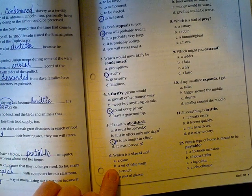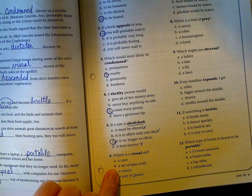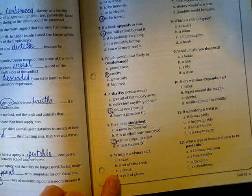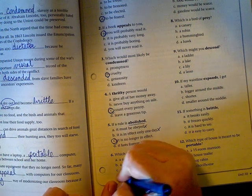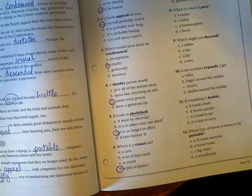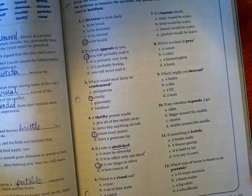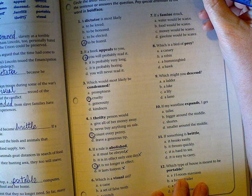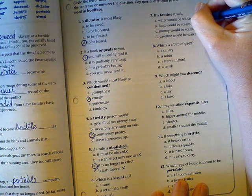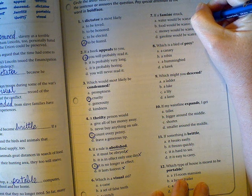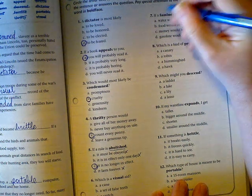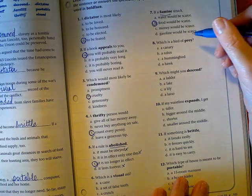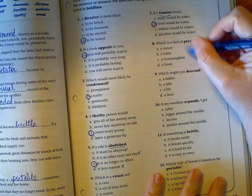A cane? I feel like that's more of an ambulatory aid. A set of false teeth? Seems like a dental aid. A crutch? That's like a cane. A pair of glasses will help you with your visual issues, so letter D. If a famine struck: water would be scarce? No, I don't think that's what a famine's about. Food would be scarce? That sounds right. Money would be scarce? No. Gasoline would be scarce? No, a famine is about food. Which is a bird of prey?